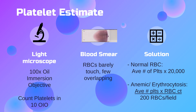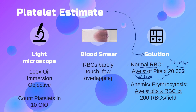For normal red blood cells, the average number of platelets is multiplied by 20,000 to compute the platelet estimate. The average number of platelets is the total number of platelets in the 10 oil immersion fields divided by 10. The factor 20,000 is the platelet estimate factor and serves as a general guideline.